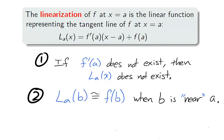As we witnessed earlier by zooming into a graph, the closer a value b is to a, the nearer L sub a of b is to f of b. This is why this section is called linear approximation. L of a is a line which approximates our function when values are close to a.